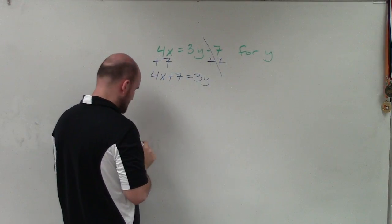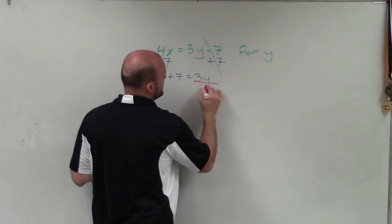Now I need to undo multiplication by 3. So I'm going to divide by 3 using the division property of equality.